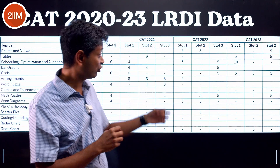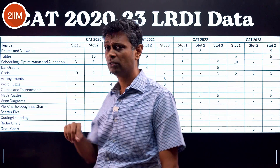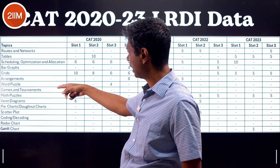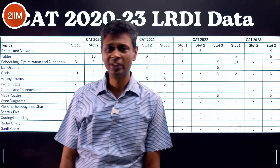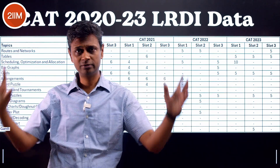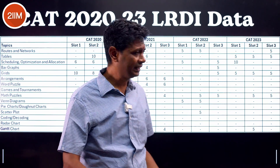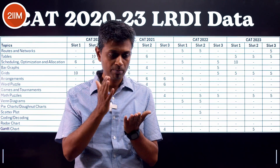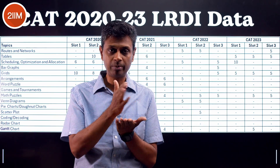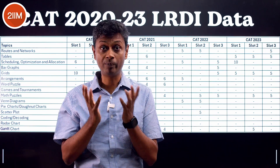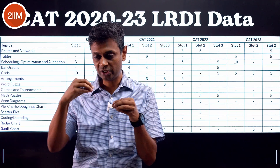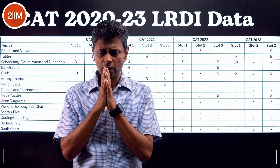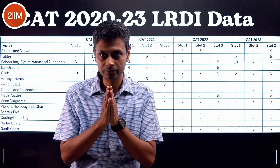The one big takeaway from DILR — which is why we put together this giant table capturing all the information from the last four CATs — covers all known categories: groups, networks, tables, scheduling, bars, arrangements, word puzzles, and more. If you look at this, it's like a scatter plot with no correlation, nothing. CAT moved from DI separately and LR separately to a combo: one unit of math, one unit of non-routine thinking, one unit of puzzle, wrapped in a story — think differently, think out of the box.